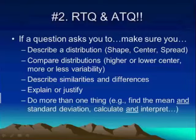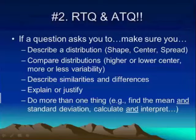And this is the trickiest one. If a question is a compound question that asks you to do more than one thing — for example, find the mean and the standard deviation of a random variable, or calculate and interpret a confidence interval — the student has to do both things to get full credit. So it's really important that you read the question carefully and be sure you've answered the question that was asked. If it's a yes-no question, you need a yes or a no, and you need justification.